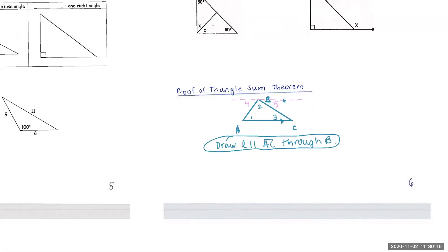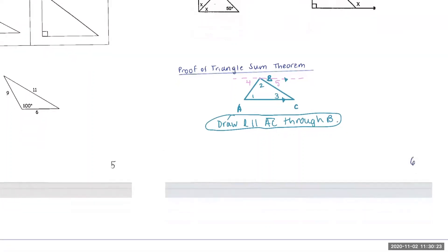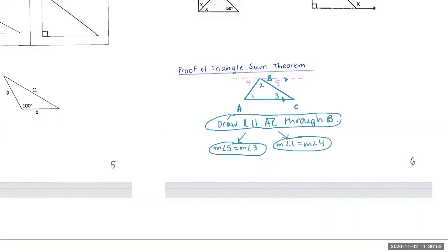Based off of what you guys just learned, if those two lines are parallel, what sets of angles are congruent to each other? There are two sets. Peter said measure of angle five equals measure of angle three, and Christian said measure of angle one equals measure of angle four. Those are both true. So we know that since the line is parallel, those sets are equal to each other. What would your justification be for that? Let's drop AIA below those two statements.